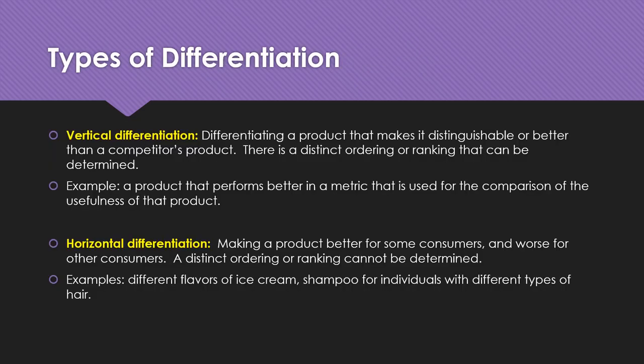There are two types of differentiation. The first is vertical differentiation — making your product objectively better than your competitor's in terms of usefulness. This might mean longer battery life, greater durability, higher quantity for a lower price, or simply more useful features. That's what most firms aim for: building a better mousetrap.